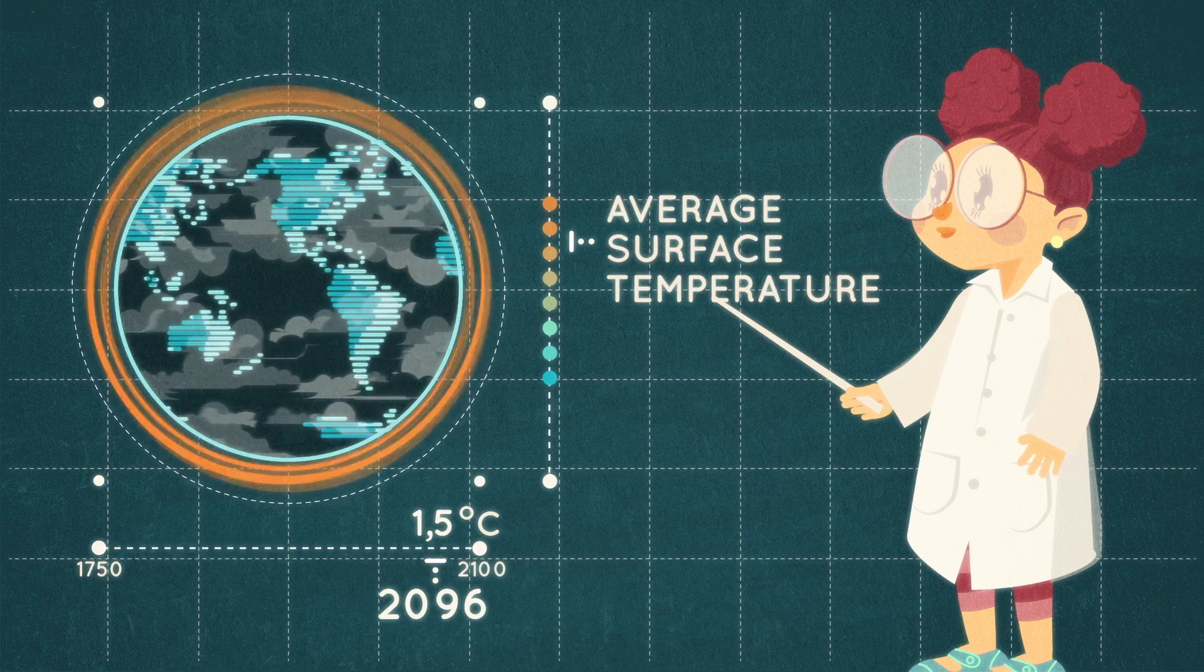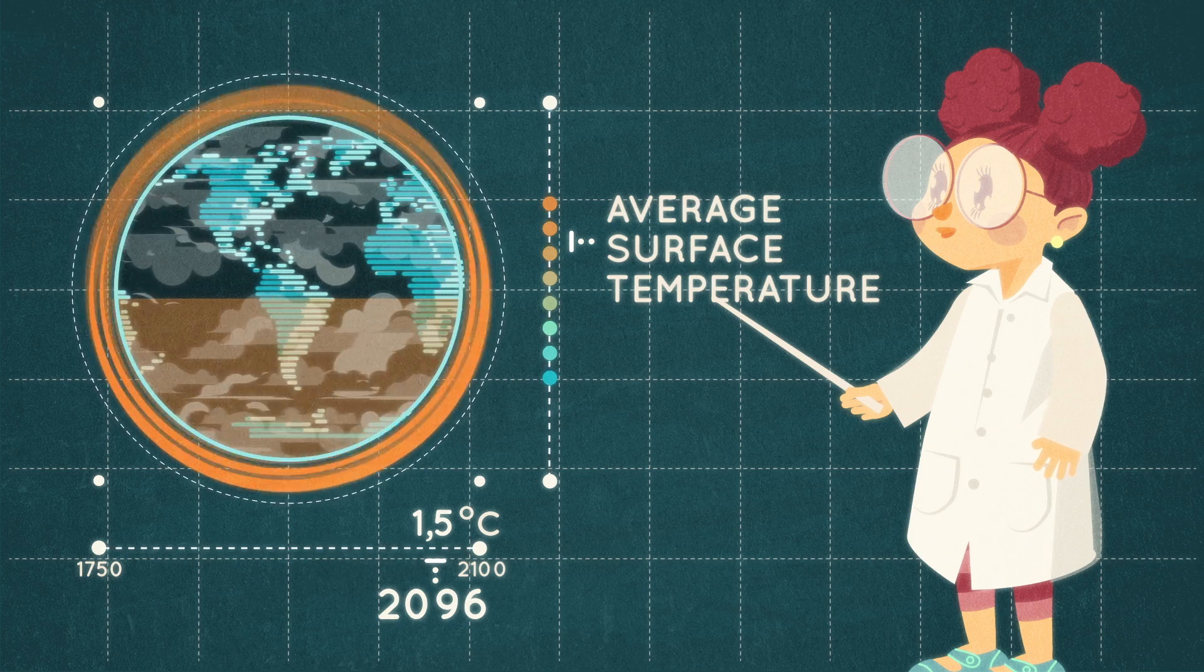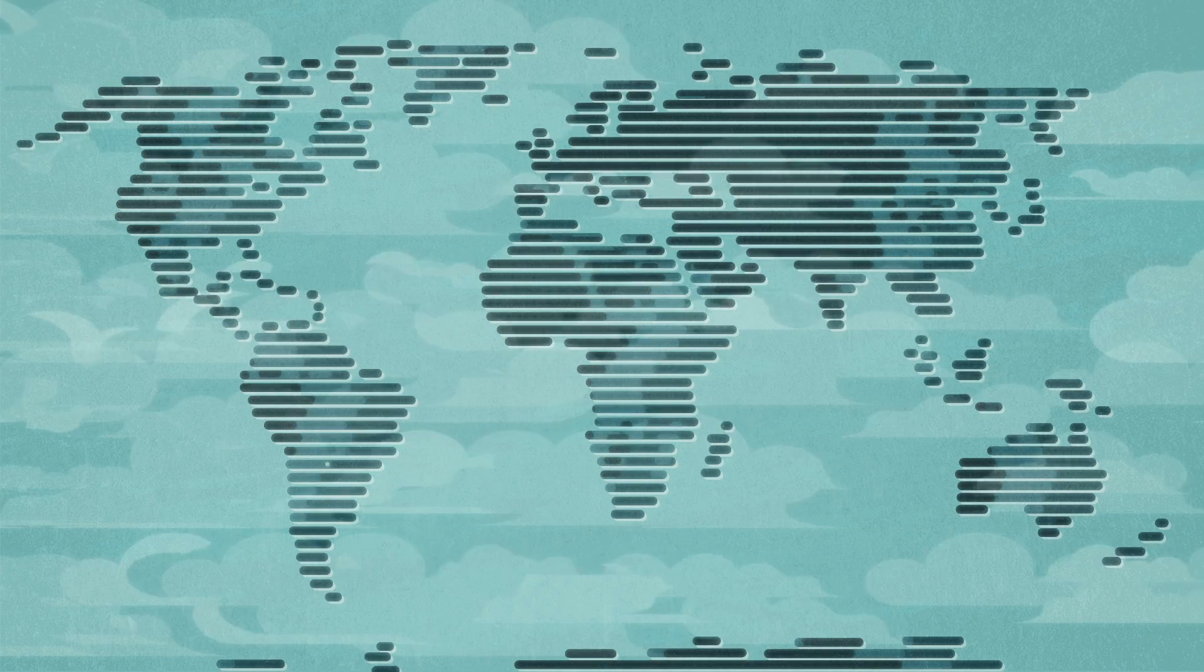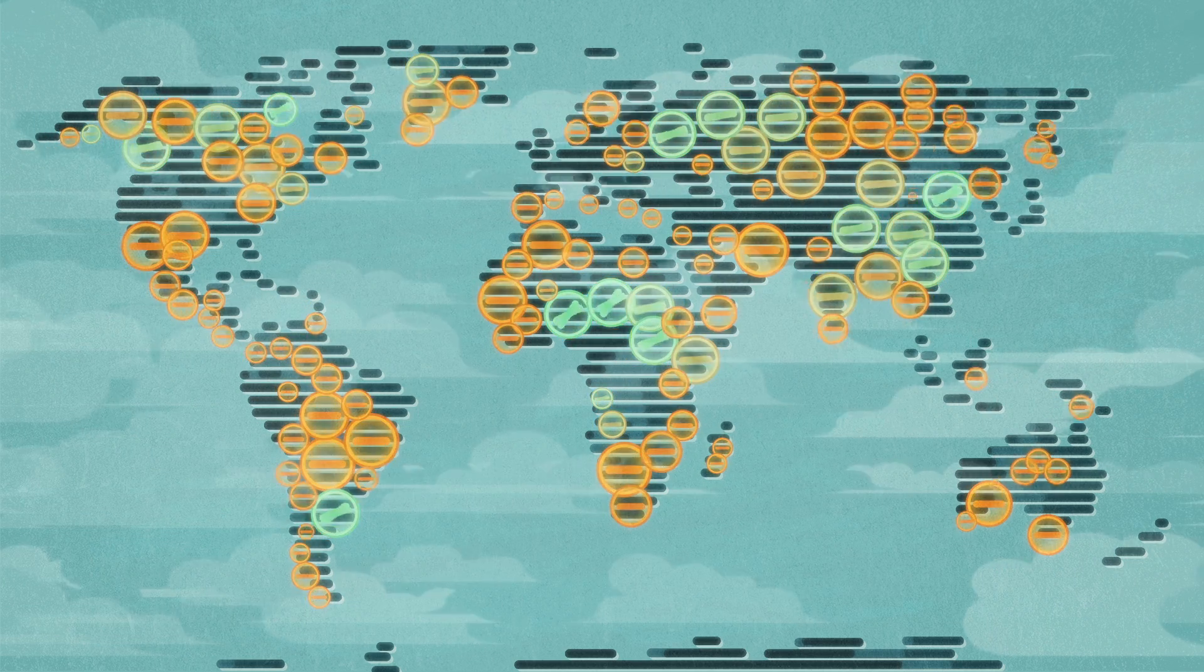If the increase is near the low end, 1.5 Celsius, then we're already halfway there and we should be more able to adapt with some regions becoming drier and less productive, but others becoming warmer, wetter and more productive.